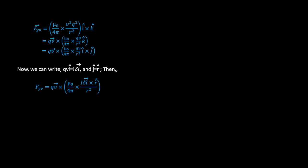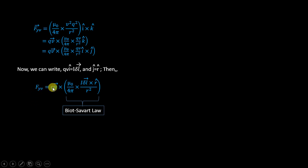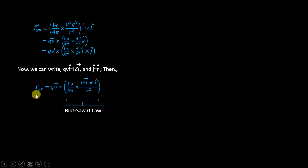We can now clearly recognize the Biot-Savart law inside the brackets: B = (μ₀/4π)(I·δl × r̂)/r². So the total velocity-dependent force becomes Fy_v = q·v⃗ × B, which is exactly the Lorentz magnetic force.